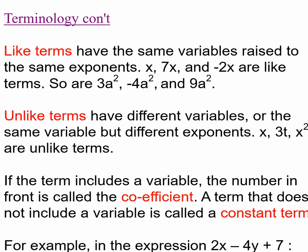Unlike terms have different variables, or they might have the same variable but different exponents. So x and x² are not like terms, and x and 3t—obviously different variables—are not like terms.